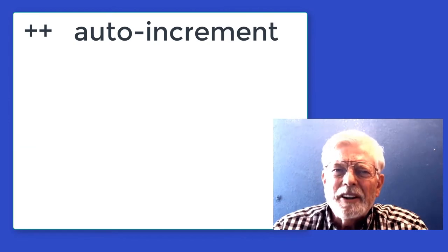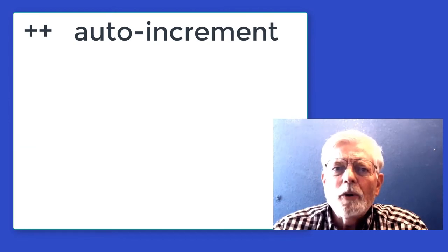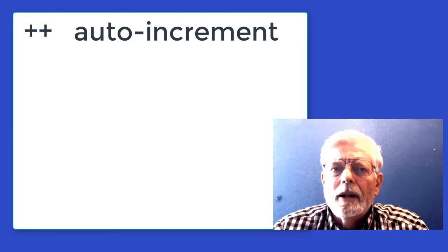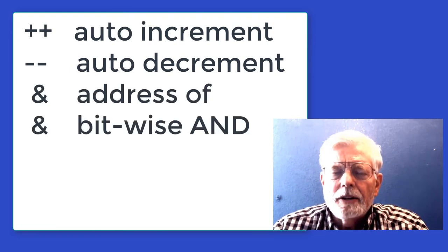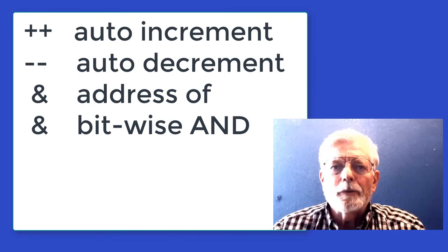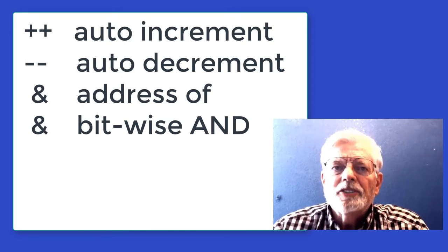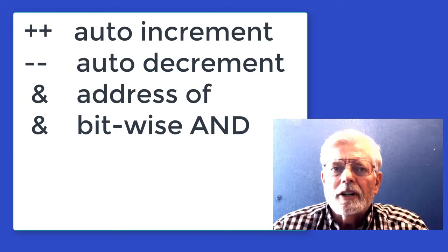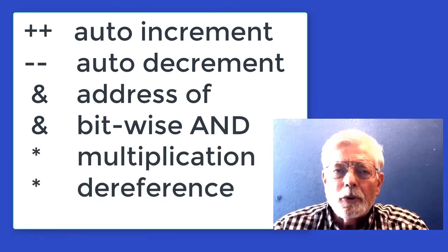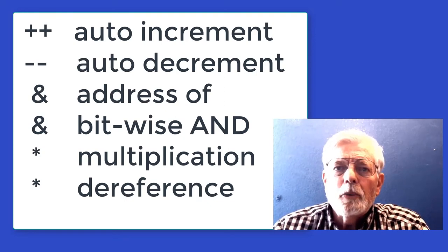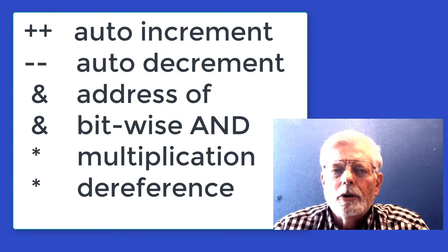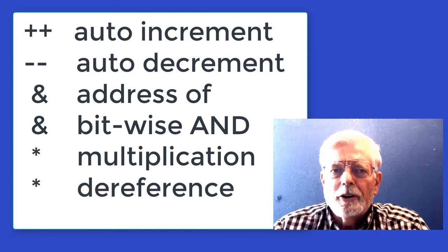Some operators can have a different meaning depending on how they are used in the program. I see two versions of the auto-increment (plus plus) and auto-decrement (minus minus). They are covered in a different presentation. The ampersand can mean either address of or bitwise AND. These are covered much later in the class. The asterisk (star) can mean either multiplication or indirection dereference when using pointers. Pointers are covered much later in the class.